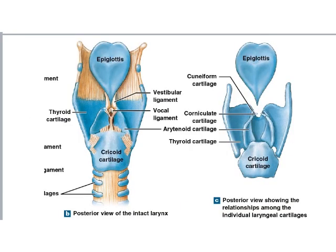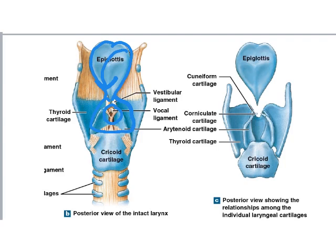Here's a posterior view of the larynx — as if you removed the neck tissue and looked from behind. You can really appreciate the epiglottis here — it's a decent-sized piece of tissue. The glottis is the opening in the middle, and you can see how if the epiglottis folded down it would cover the glottis and protect it from aspirating food. Other than the epiglottis, thyroid cartilage, and cricoid cartilage, you don't need to learn the other cartilages.